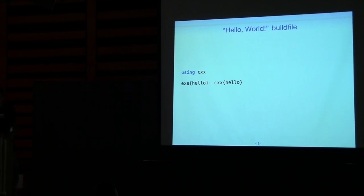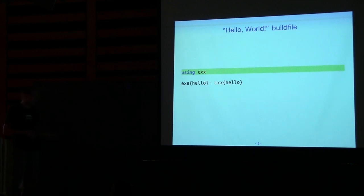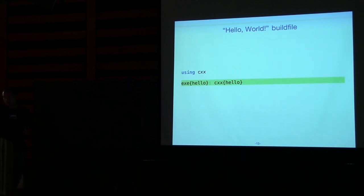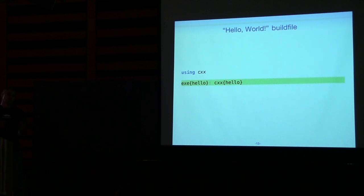Let's take a look at the build file — two lines. First line: we're loading some C++ subsystem. In build terms, we are loading a C++ module — support for compiling C++ source code and linking it. Second line: a little bit more interesting. Those of you familiar with Make can probably guess what's going on — we have an executable target on the left and a prerequisite on the right. A couple of differences compared to Make.